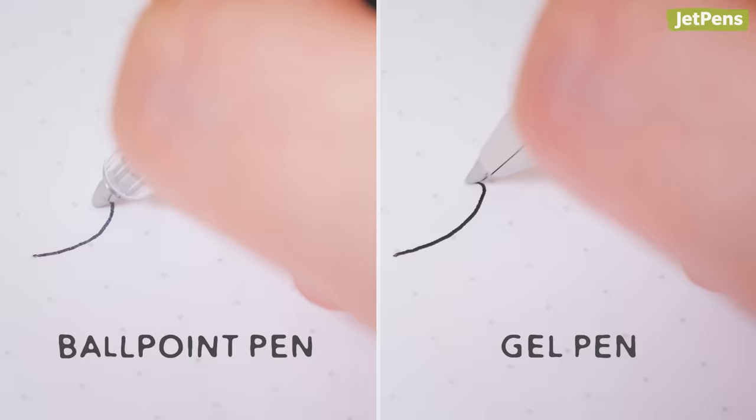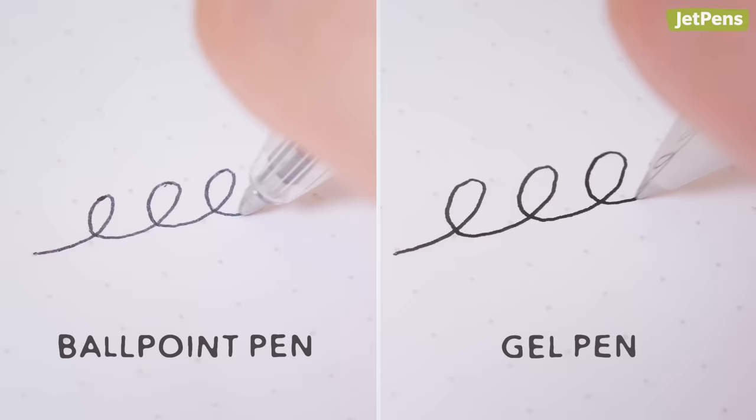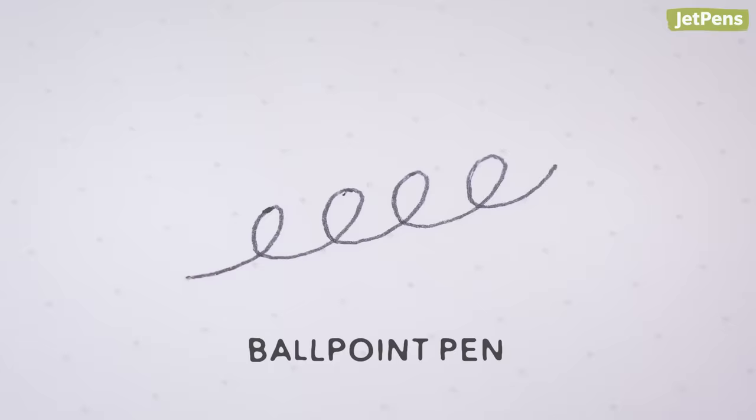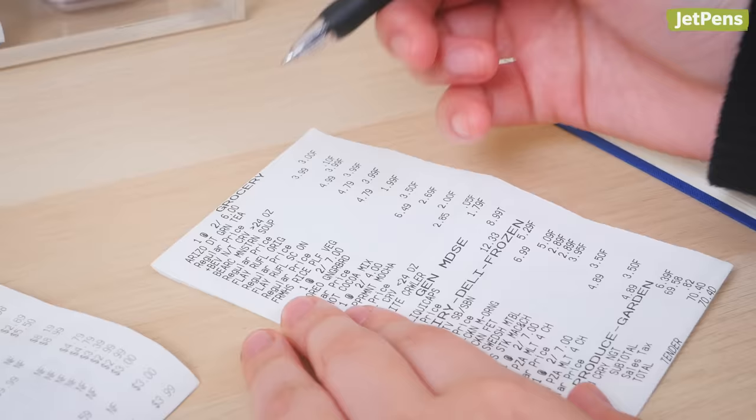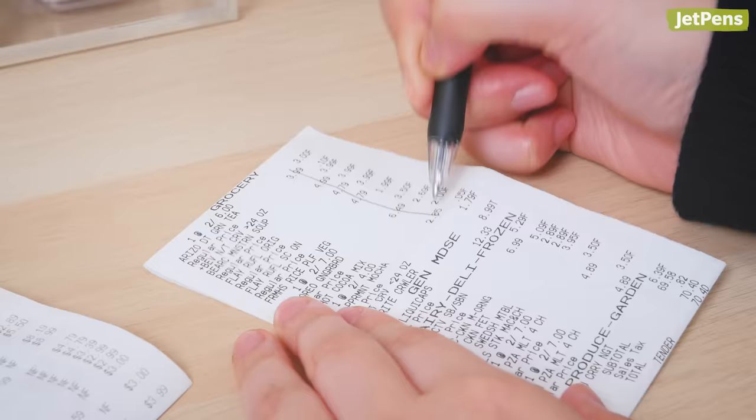Ballpoints use oil-based ink, unlike gel pens, which use water-based ink. Oil-based ink is viscous and dries quickly, so it resists smearing with highlighters. This also allows ballpoints to write on a variety of paper surfaces, including receipts and cardboard.